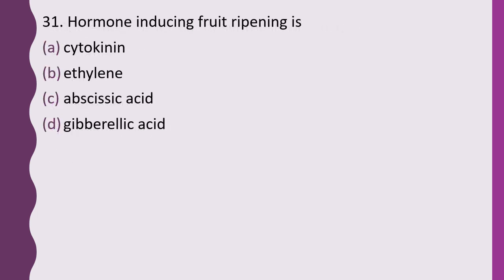Question 31. Hormone inducing fruit ripening is: cytokinin, ethylene, abscisic acid, or gibberellic acid. The correct answer is option B — ethylene induces fruit ripening.